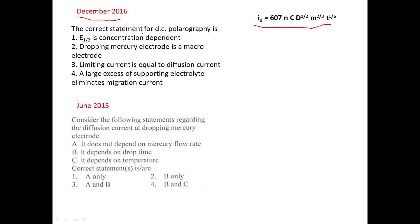The December 2016 question asks for the correct statement for DC polarography. Option A: E half is concentration dependent. E half is the half-wave potential, and it is never dependent on concentration. It is characteristic of every compound — it depends on the metal or analyte being used — so this is totally incorrect.